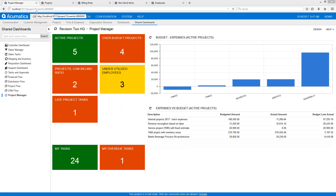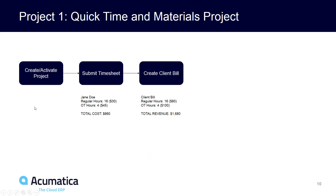Let's demonstrate this process with a simplified time and materials project. In this project we're only going to have one timesheet, which is Jane Doe submitting some regular and OT hours. Notice that the ratio of the rates is different for her hours versus the hours that we're going to bill the client. Let's see how all this works.